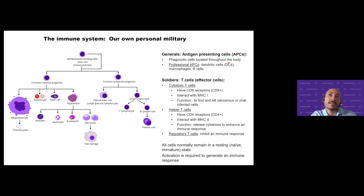Certain cell types are very good at this and are called professional antigen-presenting cells — very effective at phagocytosis and instruction to T cells. The three main ones are dendritic cells, macrophages, and B cells, of which by far the most important are dendritic cells, which have generated a great deal of attention in the area of vaccine design.